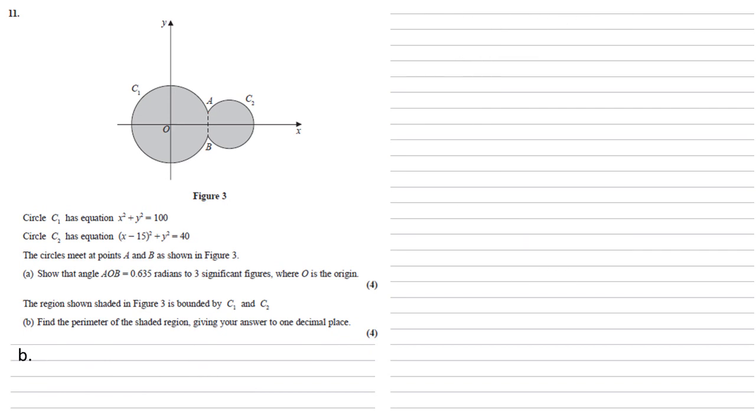The region shown shaded in Figure 3 is bounded by C1 and C2. Find the perimeter of the shaded region giving your answer to one decimal place.